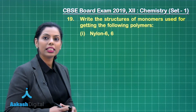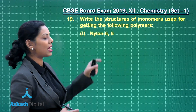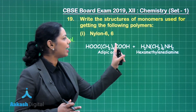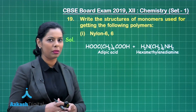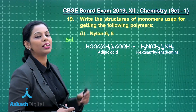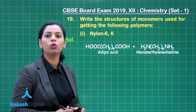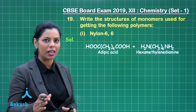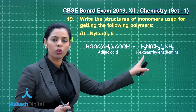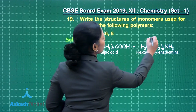First, Nylon 6,6 is the polymer. The monomeric units used for the formation of Nylon 6,6 are adipic acid and hexamethylene diamine. If you write the names of both of these monomers, you will get full one mark. Writing only one will give you half a mark, while writing both gives full one mark.